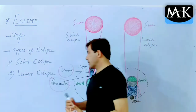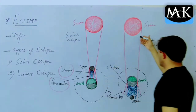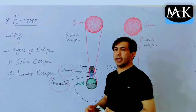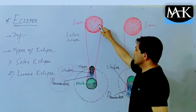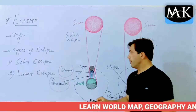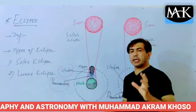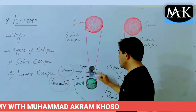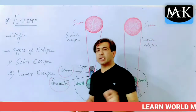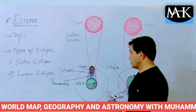I have also made diagrams here — this is the solar eclipse and here is the lunar eclipse. We'll learn in detail how these eclipses happen. Only three bodies are involved whether it is solar or lunar eclipse: the sun, the earth, and the moon. The sun is a star, and stars are self-luminous bodies — they are bright and have their own light.